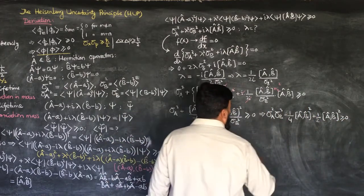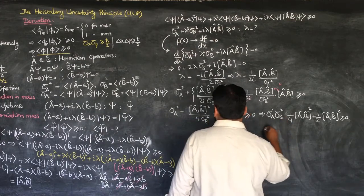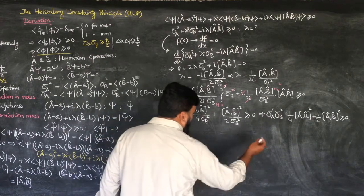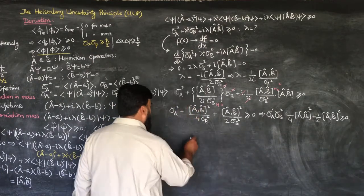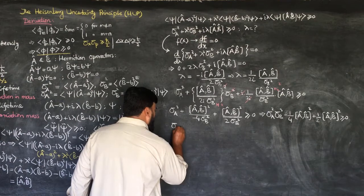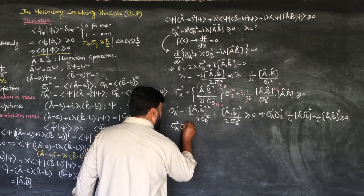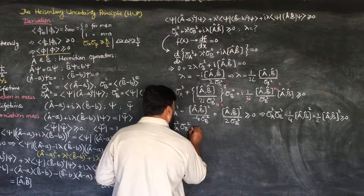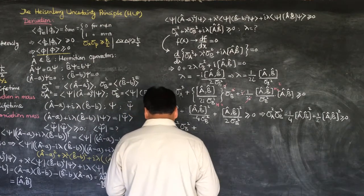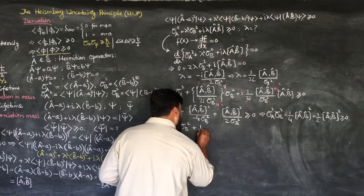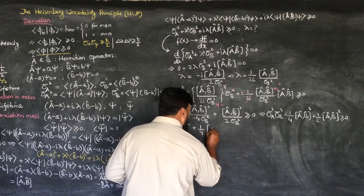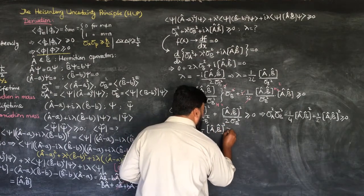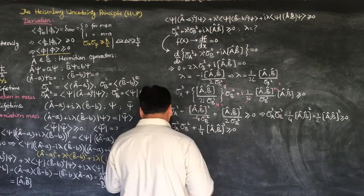Combining -1/4 plus 1/2 gives +1/4, so σ_A²σ_B² minus (1/4)[A,B]² ≥ 0. This implies σ_A²σ_B² ≥ (1/4)[A,B]², which rearranges to σ_A²σ_B² ≥ (1/(2i))²[A,B]².